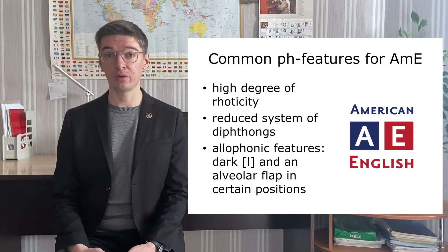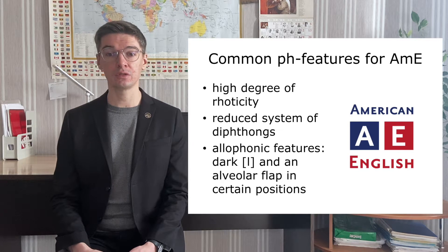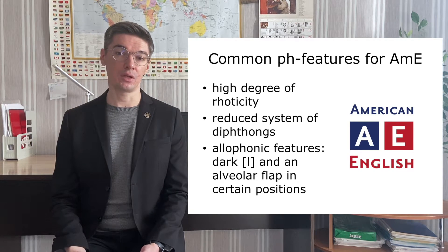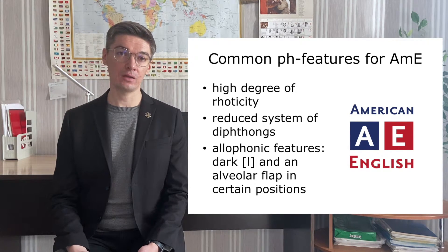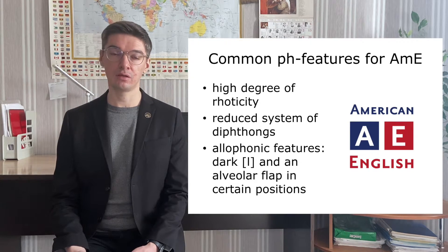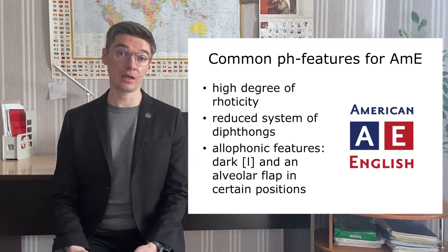As you see, not all the features that I've mentioned above can be present in the speech of an ordinary American. However, there are a couple of salient ones that can help you identify the native speaker as an American. First of all, it's a high degree of rhoticity — the phoneme R is always pronounced after the vowels — and it leads to the reduction of the diphthong system, because American English lacks central diphthongs. Next, the dark allophone of the phoneme L is used everywhere. And finally, the phonemes T and D are realized as an alveolar flap in the intervocalic position.